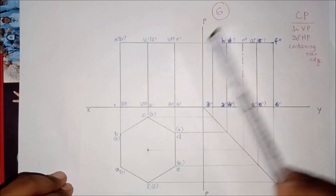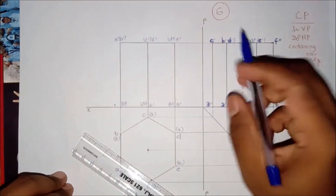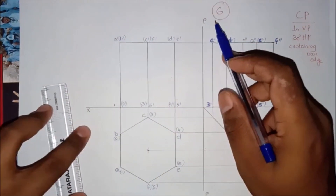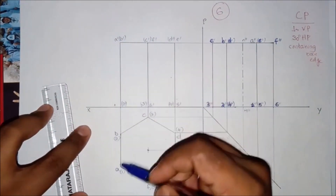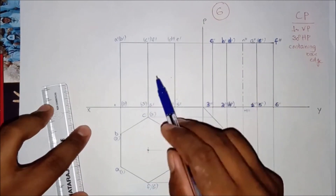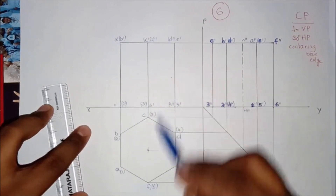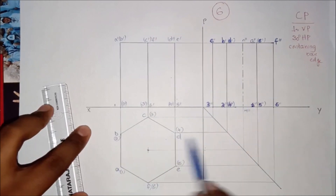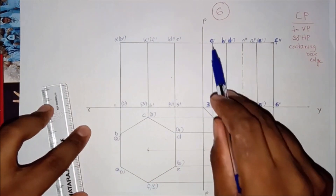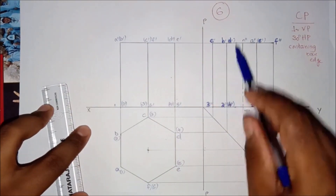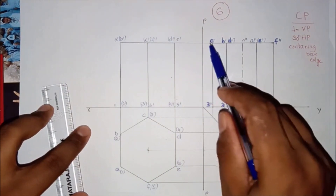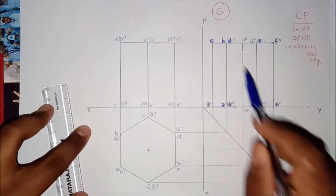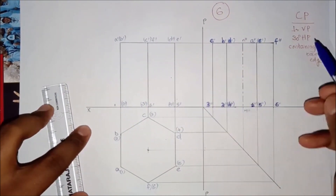This is question number 6. This question is on a hexagonal prism — I have already done the sectional front view, top view, and sectional side view. Here are numbers and letters for reference.